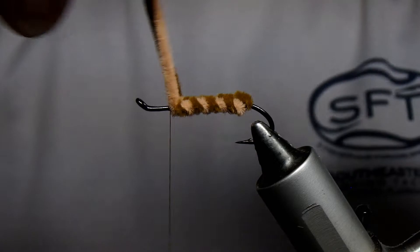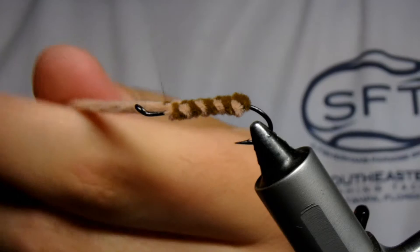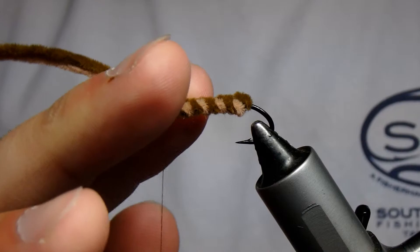Once your thread is tied in, you can nip off your tag end, bring your two strands of chenille back forward, and tie them in just like that.